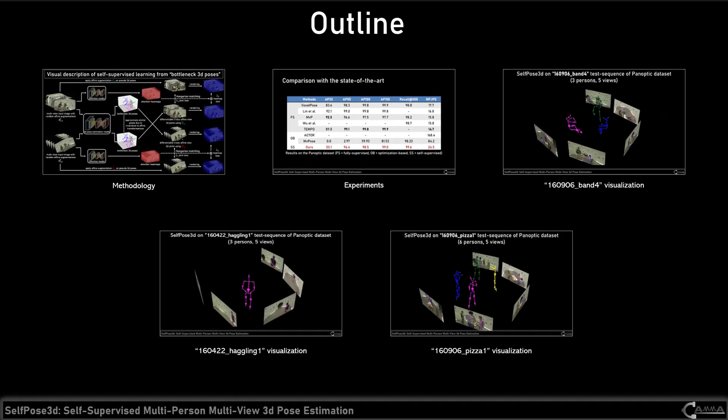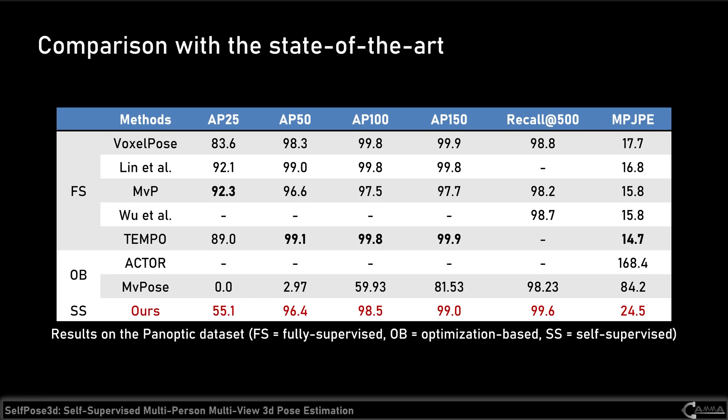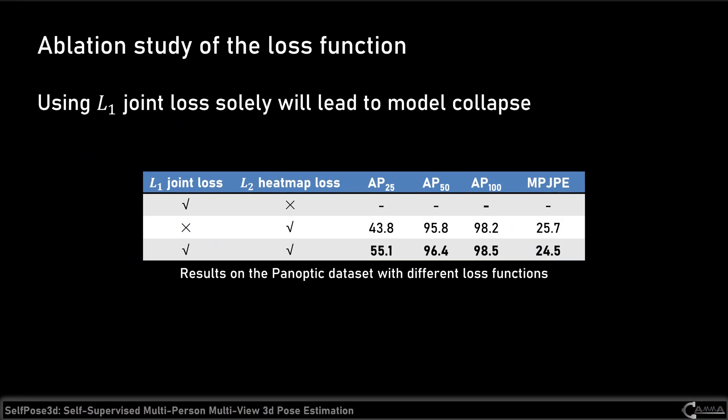We evaluate our method on the challenging CMU Panoptic dataset. Compared to the state-of-the-art fully supervised methods, our method achieves comparable performance on most indicators. However, a gap still exists on AP25. In the ablation study of the loss functions, we find that using only the L1 joint loss leads to model collapse, and the combination of both L1 joint loss and L2 heat map loss achieves the best performance.